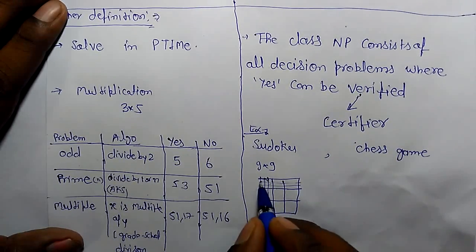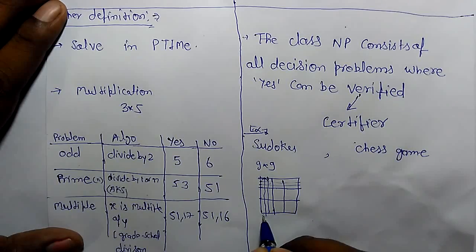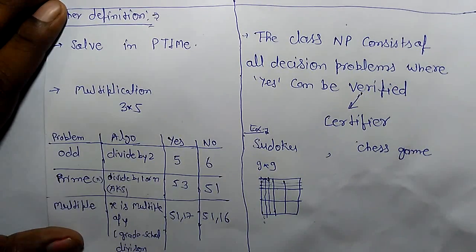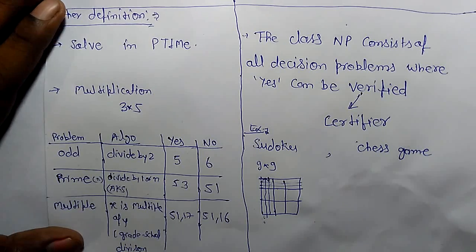The moment someone solved the SUDOKU problem, another person will verify whether you have solved it correctly or not. That person is a certifier. They can verify your solved problem in polynomial time, whether it is correct or not.